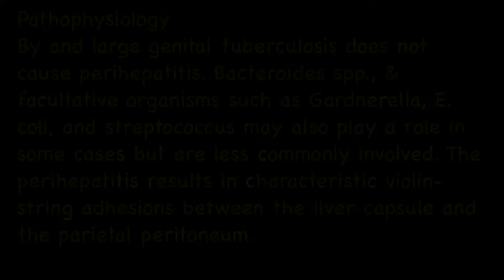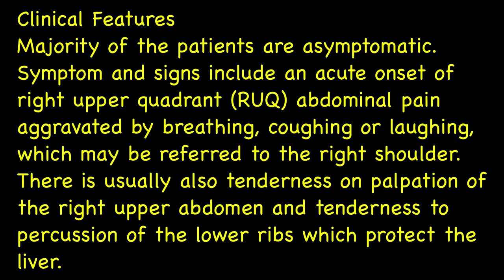Majority of the patients are asymptomatic. Symptoms and signs include an acute onset of right upper quadrant abdominal pain aggravated by breathing, coughing, or laughing, which may be referred to the right shoulder. There is usually also tenderness on palpation of the right upper abdomen and tenderness to percussion of the lower ribs which protect the liver.